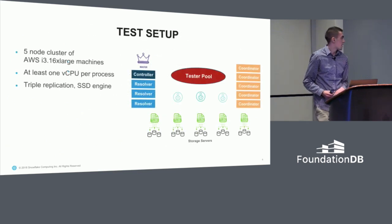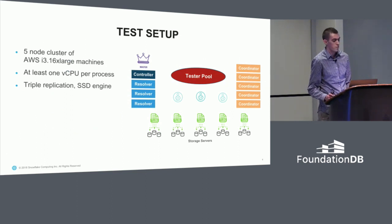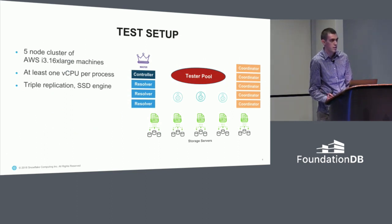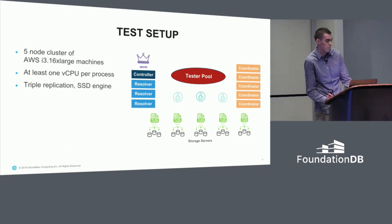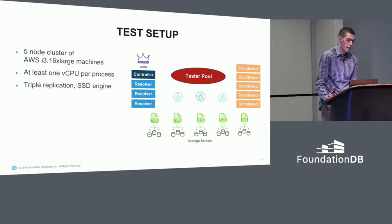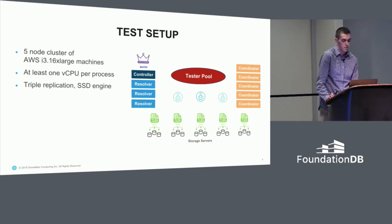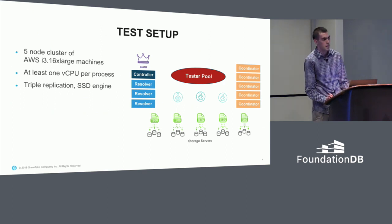So what does a typical test setup look like for us? Most of our tests are on a five-node cluster of AWS i3 16xlarge machines. We always ensure at least one virtual CPU per process and typically run with triple replication and an SSD engine.